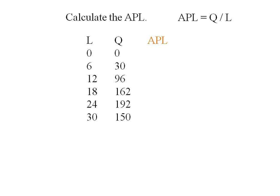Let's add an average product of labor column to our table. Zero divided by anything is zero. Some books will put a dash here instead of a zero. 30 divided by 6 is 5, 96 divided by 12 is 8, 162 divided by 18 is 9, then 8, and 5.